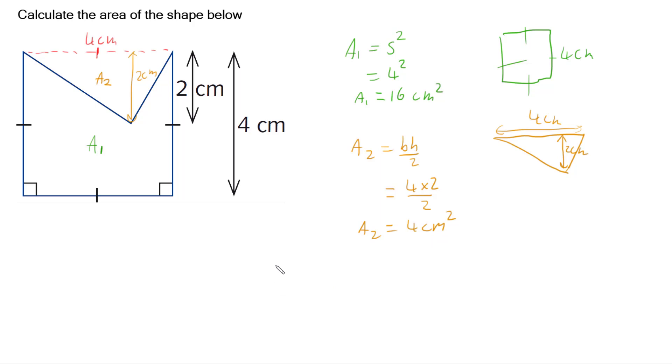And so to finally work out our overall area, our total area is going to be, as I said earlier, that square area 1 minus that triangle area 2. So we've got 16cm squared minus 4cm squared, giving us a total area of 12cm squared.